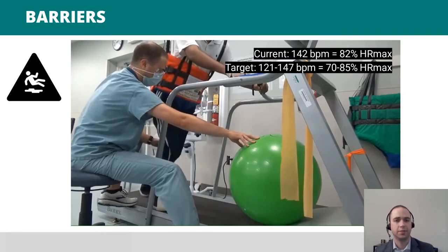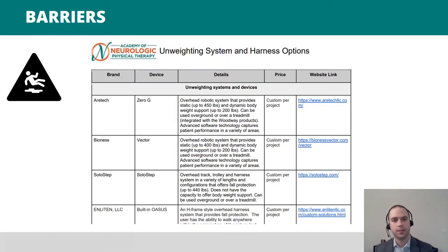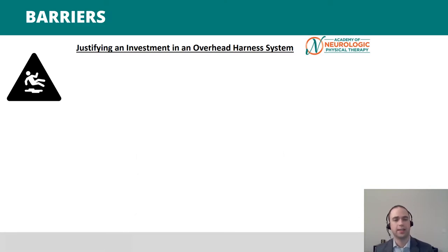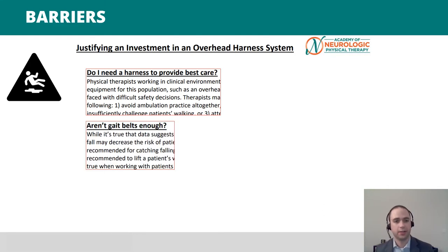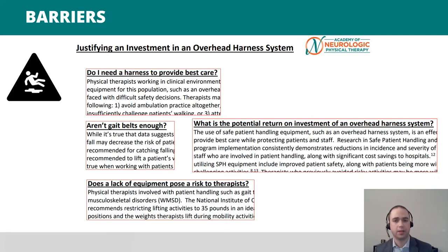Beyond improving safety, the use of a harness system decreased our patient's fear of falling. It allowed him to get more stepping repetition and had the added benefit of requiring fewer staff members. The website also has a great resource document providing several options for overhead harness and unweighting systems. We also recognize that not all facilities have access to overhead harness systems, and that supervisor and administrator support can be a barrier. That's why we created a document justifying an investment in an overhead harness system, answering key questions such as: do I need a harness to provide best care, aren't gait belts enough, does a lack of equipment pose a risk to therapists, and what is the potential return on investment? This document can be found on the VoCo Motor CPG webpage.